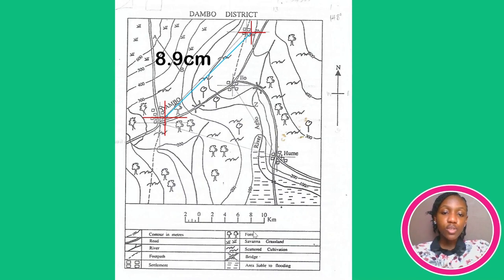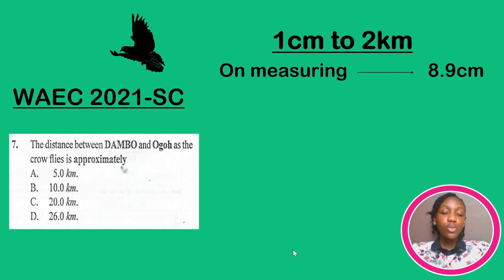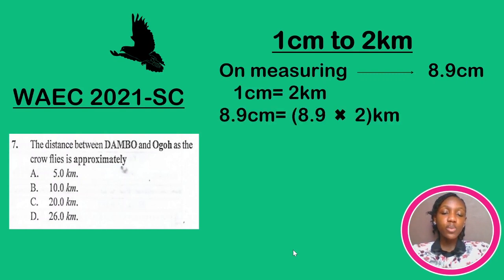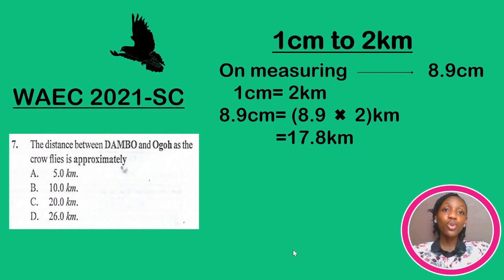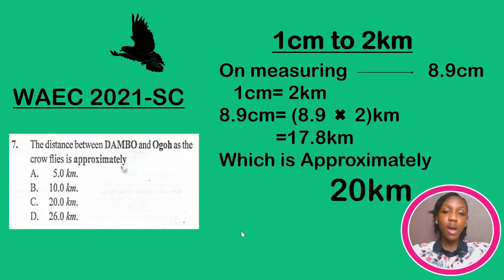Let's try solving this together. Our map scale remains the same: 1 centimeter to 2 kilometers. On measuring, we got 8.9 centimeters, but we need the actual ground distance. If 1 centimeter equals 2 kilometers, then 8.9 centimeters equals 8.9 × 2 = 17.8 kilometers. The answers between two people may vary based on where they place their cardinal points, and they won't always give you the exact decimal in the options — that's why you approximate. You may get 17.8, somebody could get 18, somebody could get 19; as long as you placed your cardinal points correctly, your approximate answer will match one of the options. So 17.8 is approximately 20 kilometers.